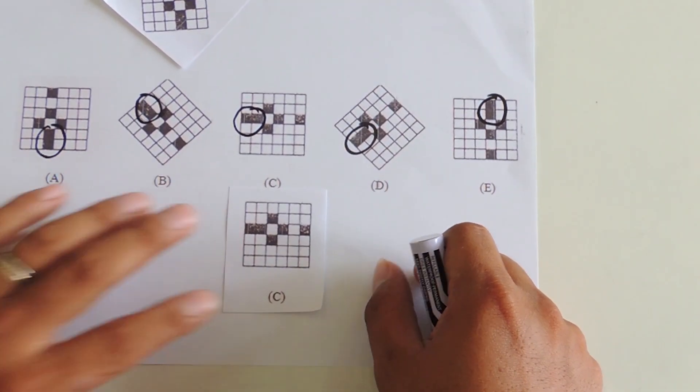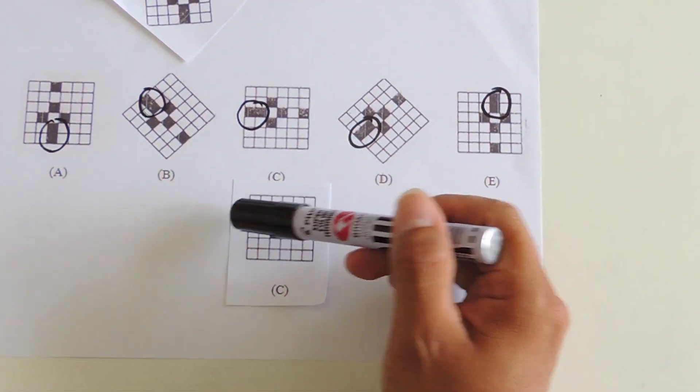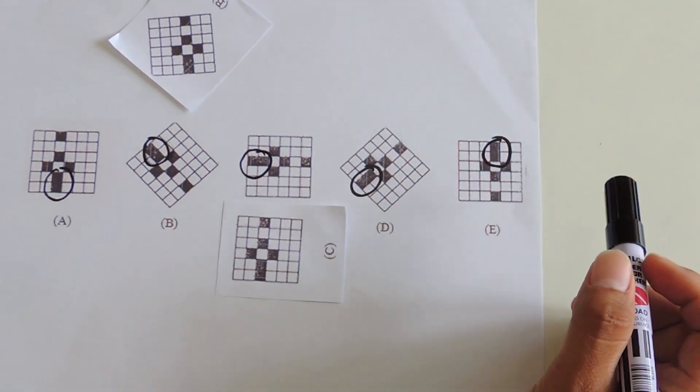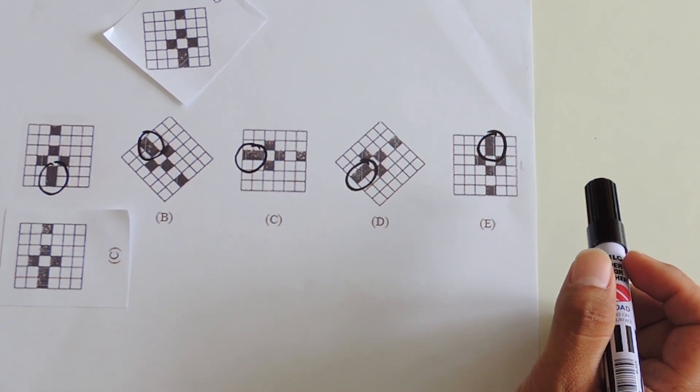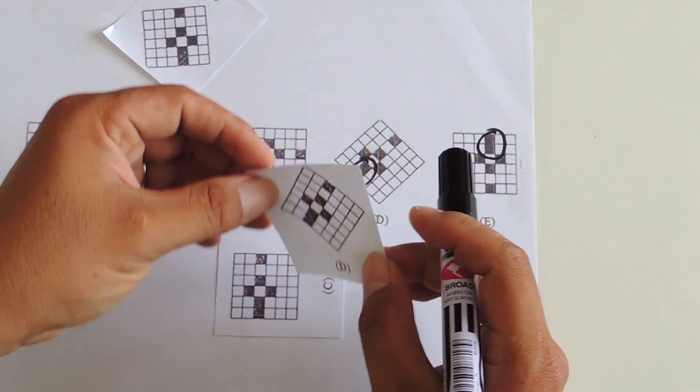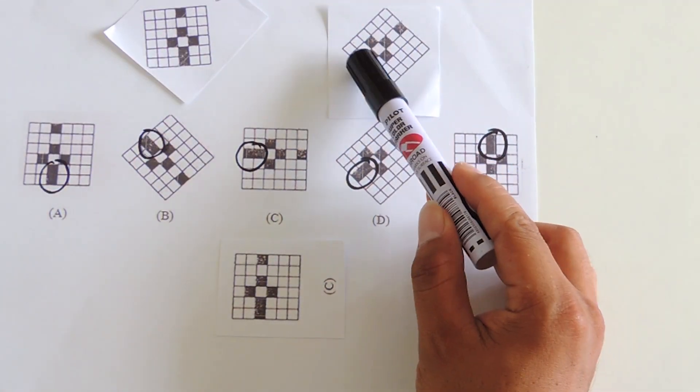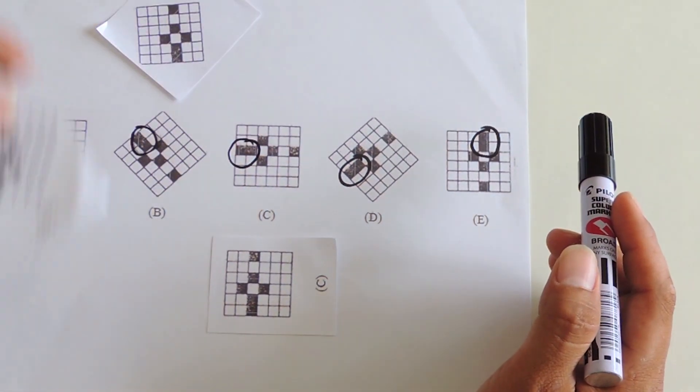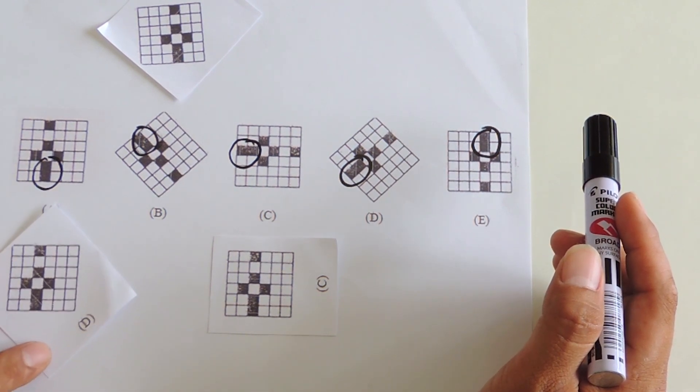Positioning option C's two shaded squares at the bottom, we will have the same as option A. Option D: positioning these two shaded squares at the bottom, we will also have the same figure as option A.